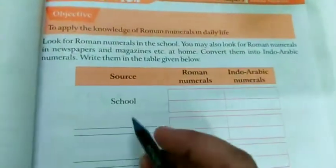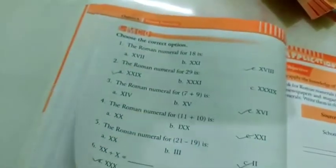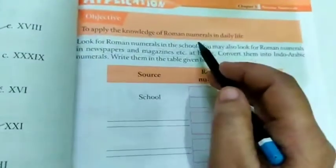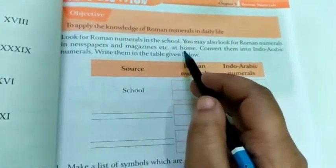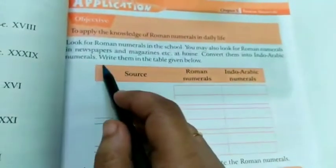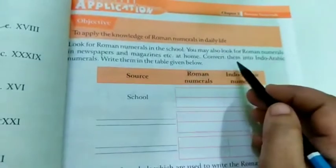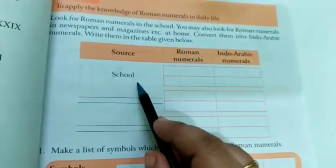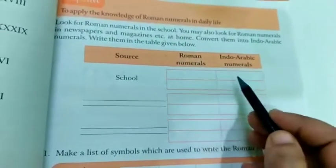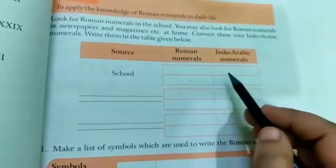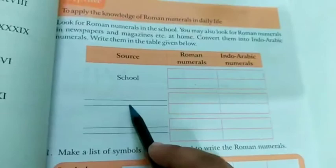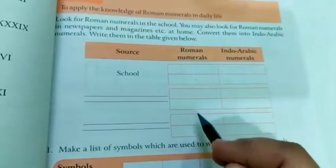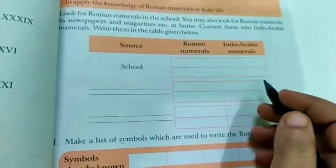Now see the application. Between pages 42, 43 and 44, I am going to send the pics. To apply the knowledge of Roman numerals in daily life, look for Roman numerals in the school. You may also look for Roman numerals in newspapers and magazines etc. at home. Convert them into Indo-Arabic numerals. Write them in the table given below. So school, jo Roman number aap dekhte ho, wo aur uska any Roman number you can write, and the same for Indo-Arabic number. At home, or from the newspaper, or from the magazine, from which source you are getting, write here. Write the Roman numbers and write the Indo-Arabic numbers, means our normal numbers.